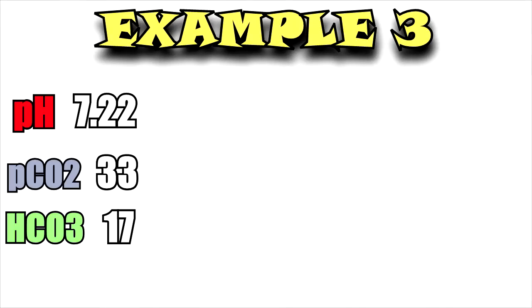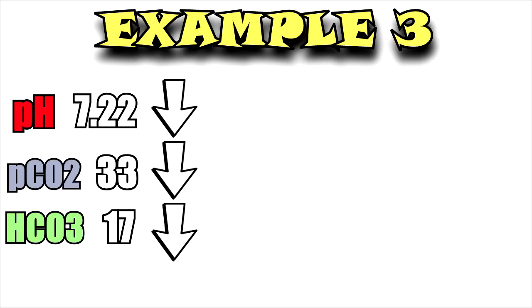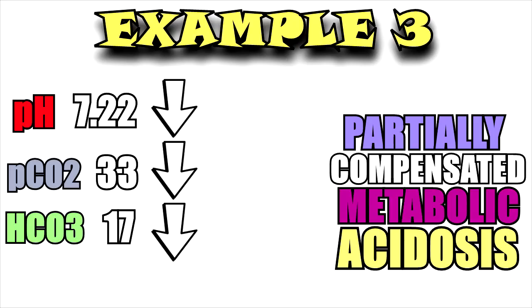In this next example, the pH is 7.22 (decreased), the pCO2 is 33 (decreased), and the HCO3 is 17 (decreased). This is partially compensated metabolic acidosis. We can determine it's partially compensated because all three — pH, CO2, and HCO3 — are out of range. The pH is acidotic, and when we analyze pCO2 and HCO3, both are out of range and decreased, but the HCO3 is most out of range, making it partially compensated metabolic acidosis.